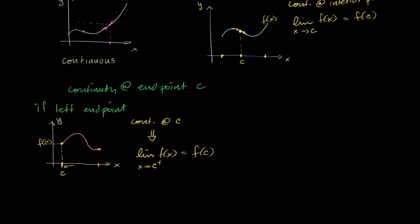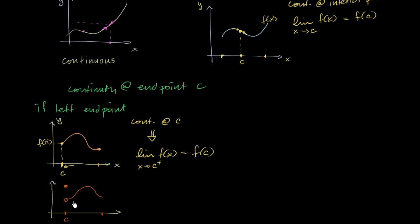What's an example where we would not be continuous at an end point? I can imagine a graph where at c there's a little hole right there — the function just has a removable discontinuity right over there. You see that this would not pass the test, because the limit as we approach c from the positive direction is right over here, but f of c is up here. So f of c does not equal the limit as x approaches c from the positive direction. This would not be continuous.